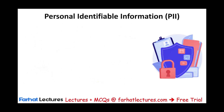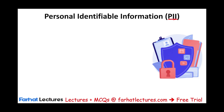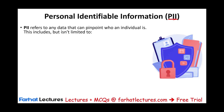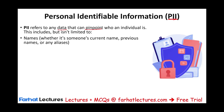One thing we need to protect is something called Personally Identifiable Information, known as PII. PII is any information that can pinpoint who an individual is — any information that gives you a hint about who that individual is, even indirectly. This includes, but is not limited to: names — current names, previous names, any aliases.